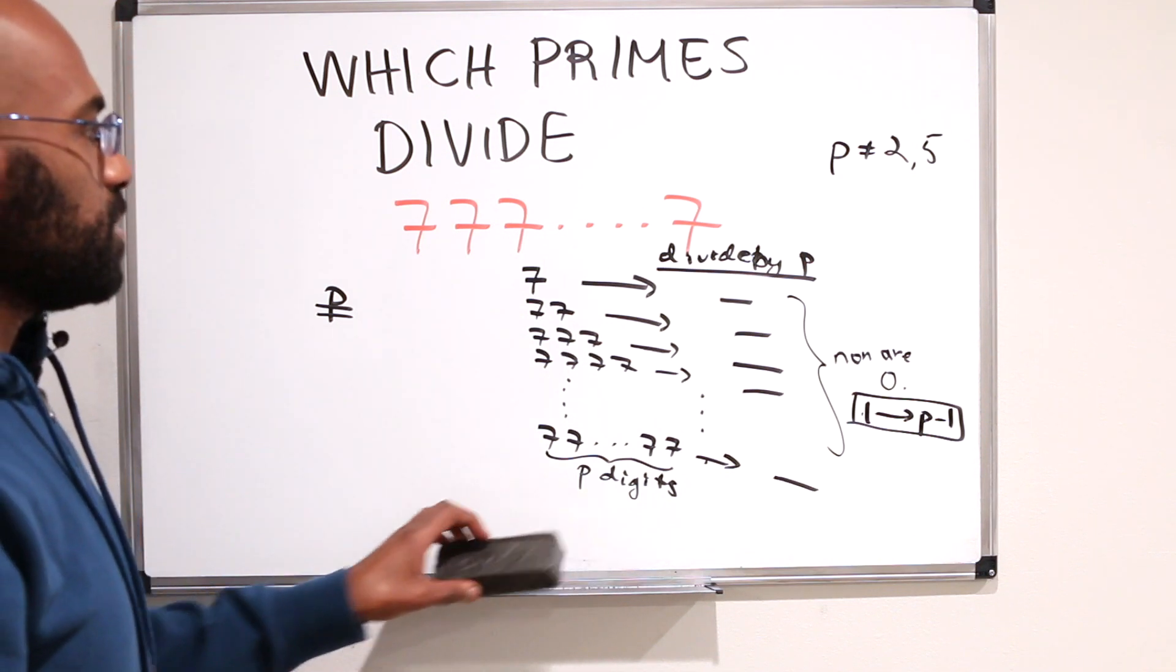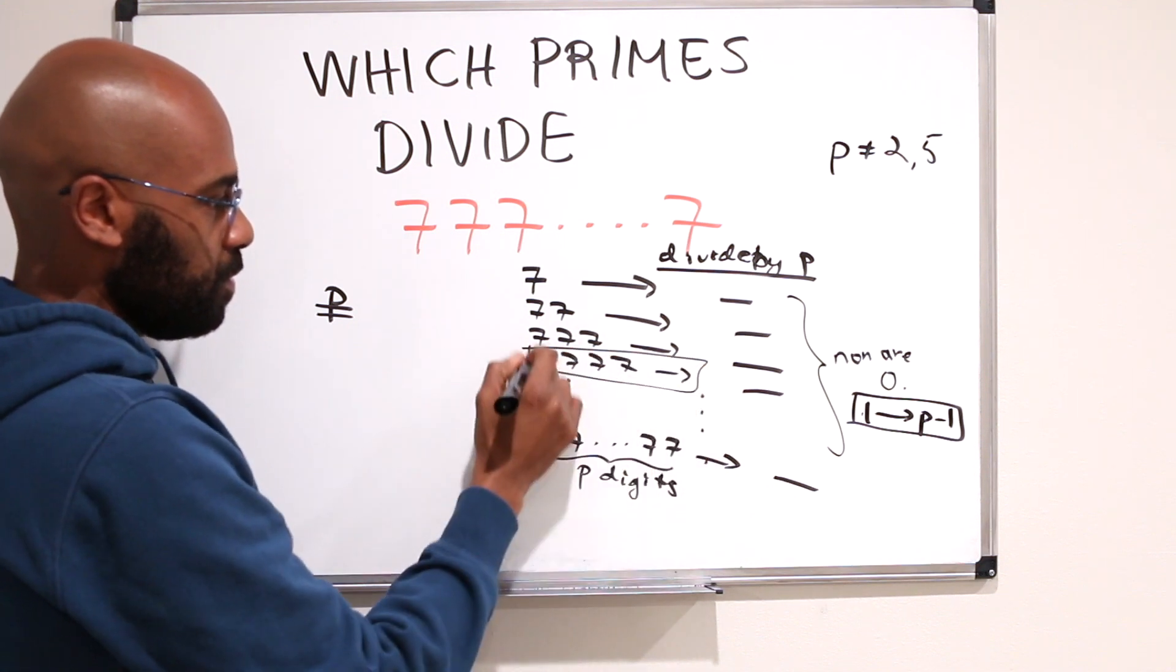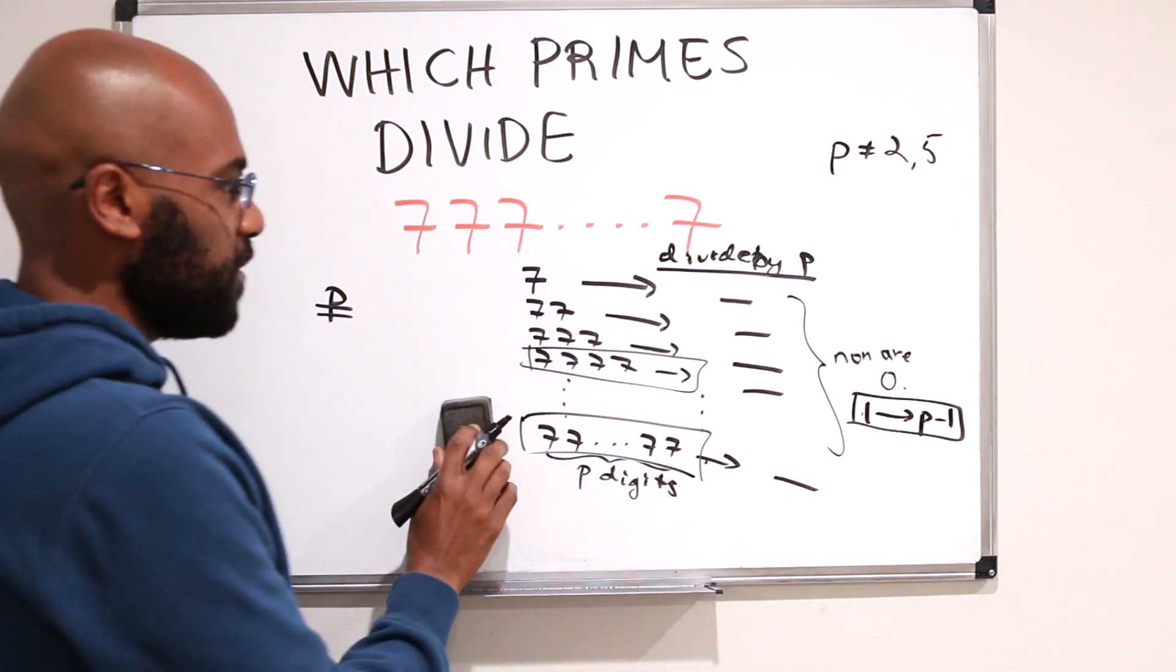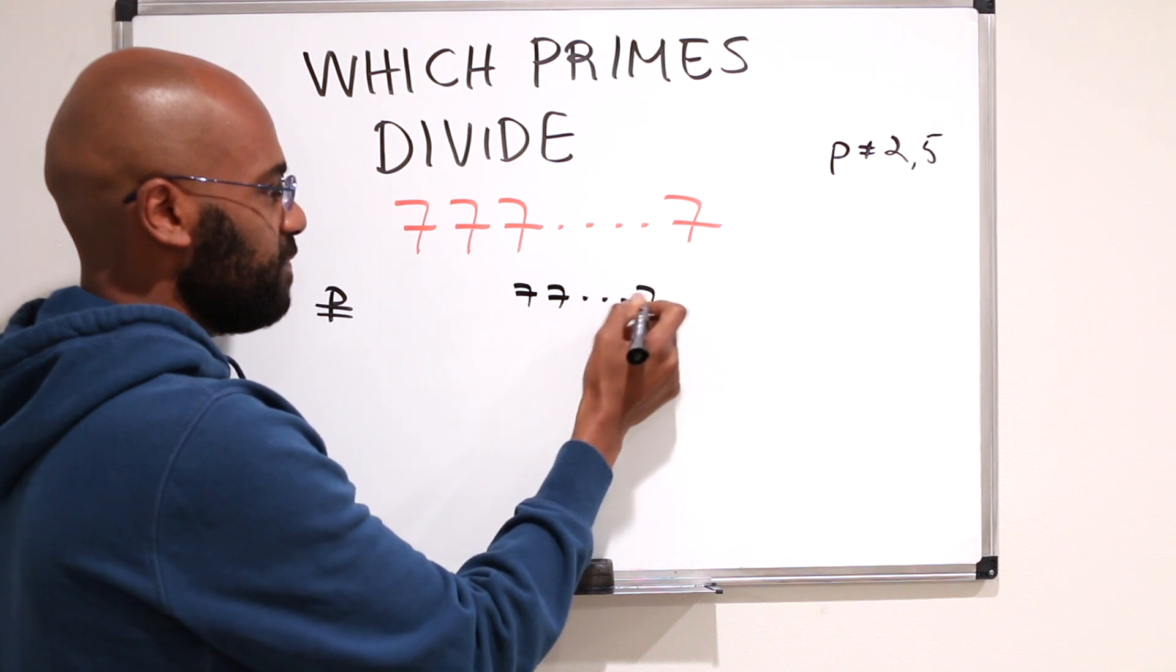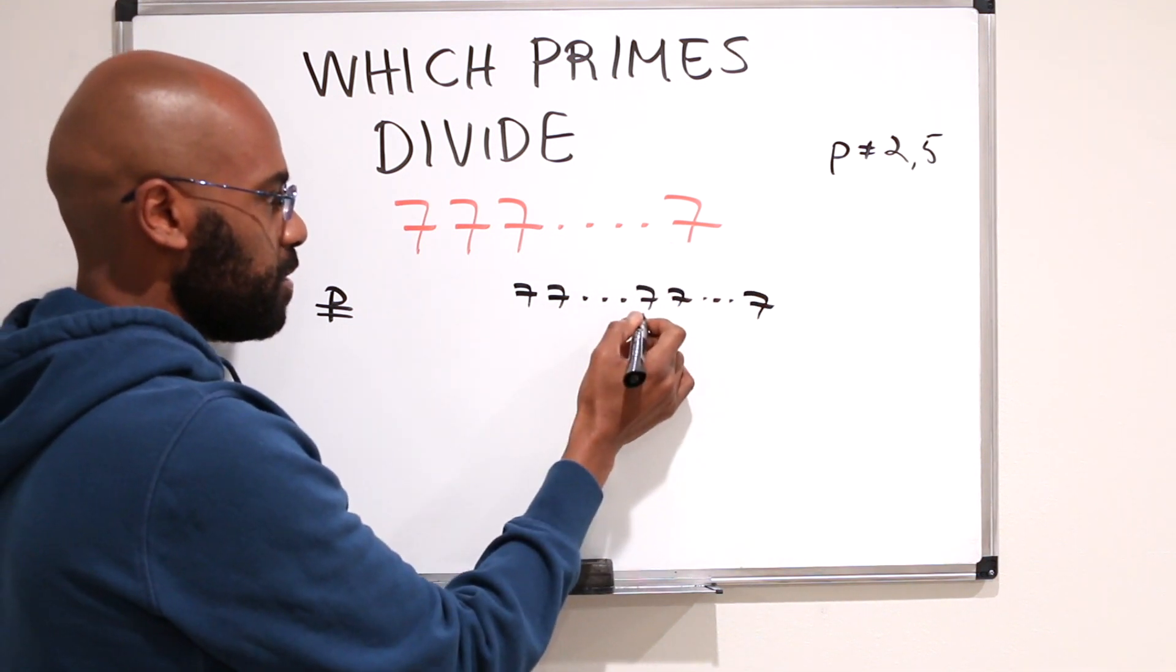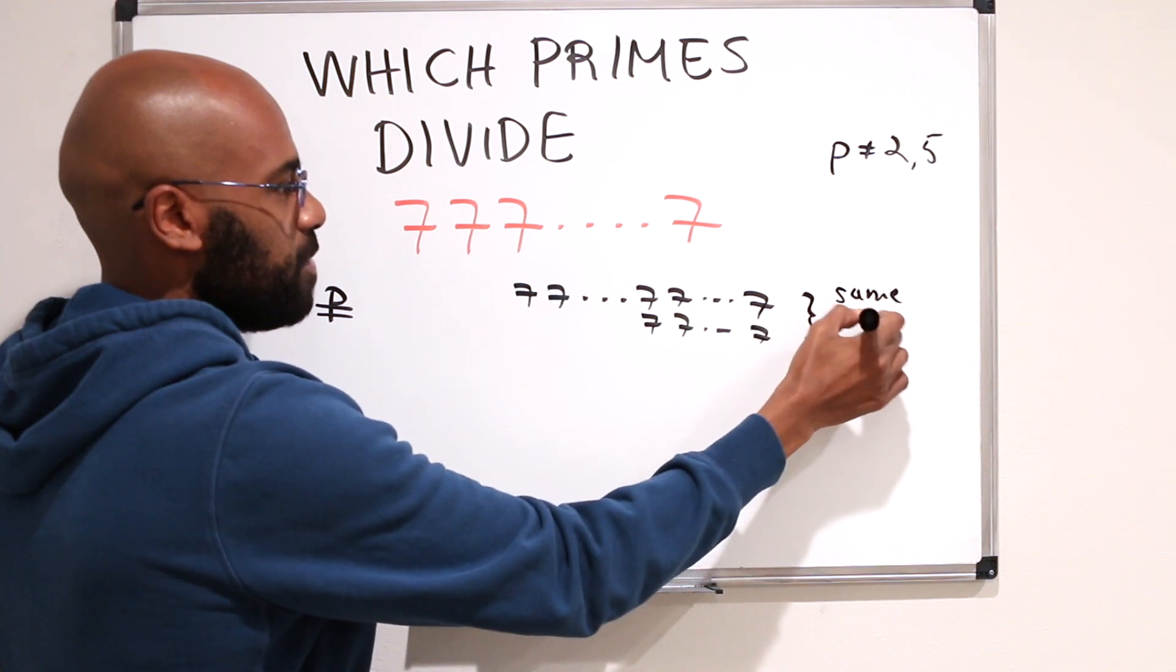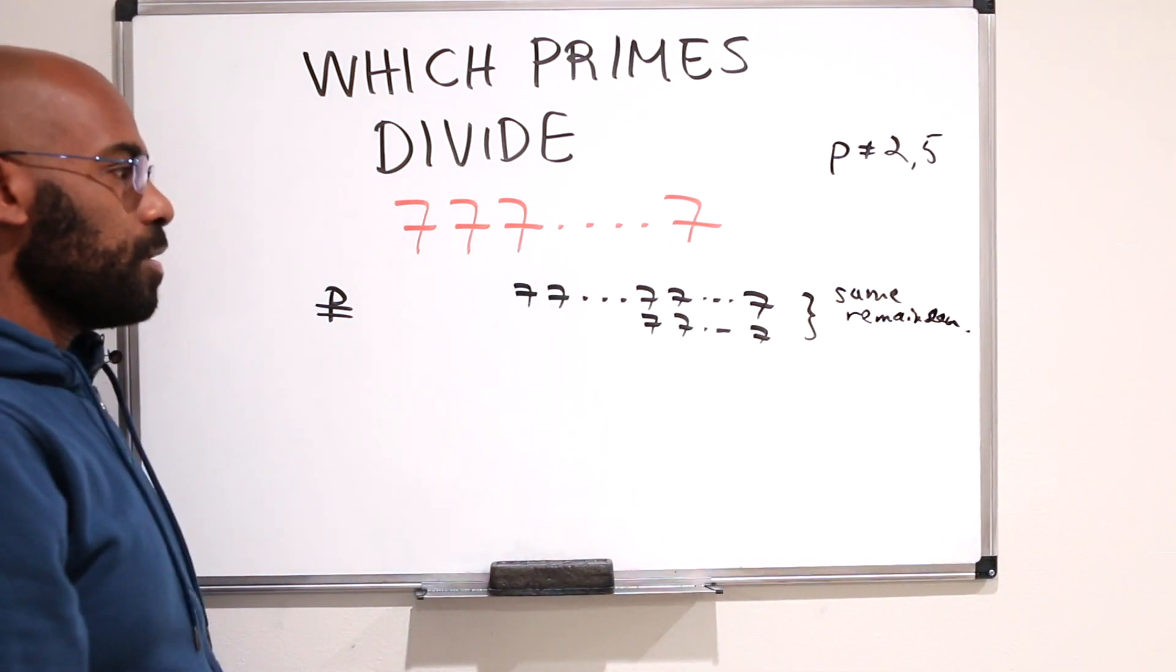Okay, so the situation we have then is something like this. We'll pick one of the smaller ones and then one of the bigger ones that have the same remainder when we divide by p. So the situation looks something like this. You have this bigger number with a bunch of 7s involved, and then another number with fewer 7s involved, and both of these have the same remainder when you divide by p.